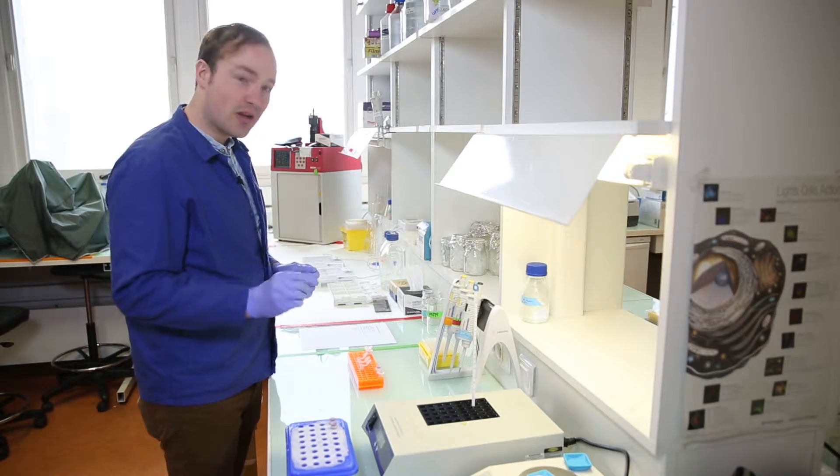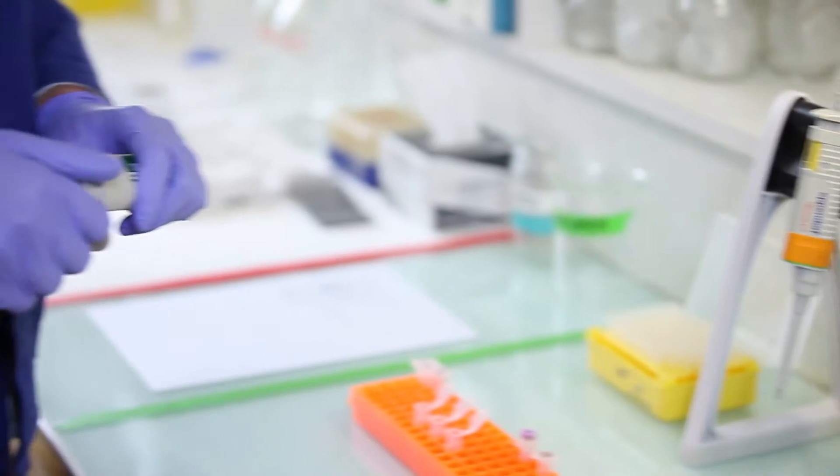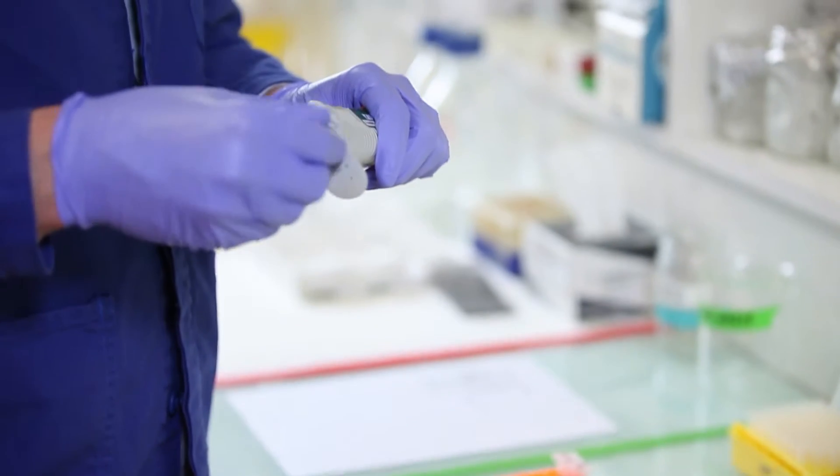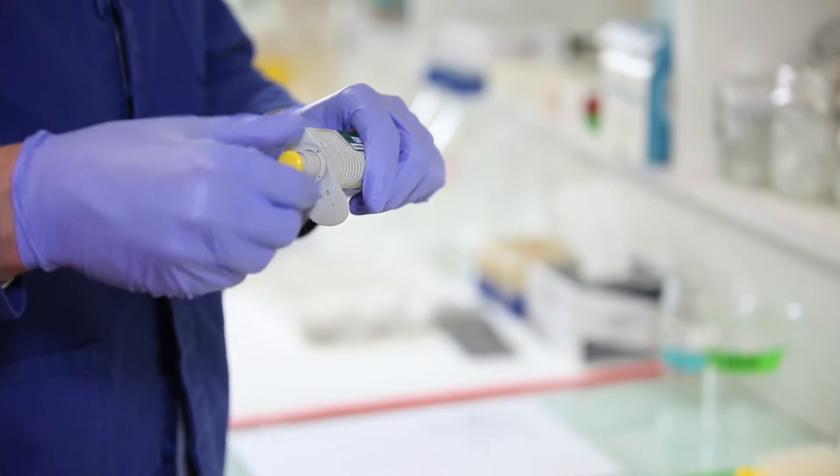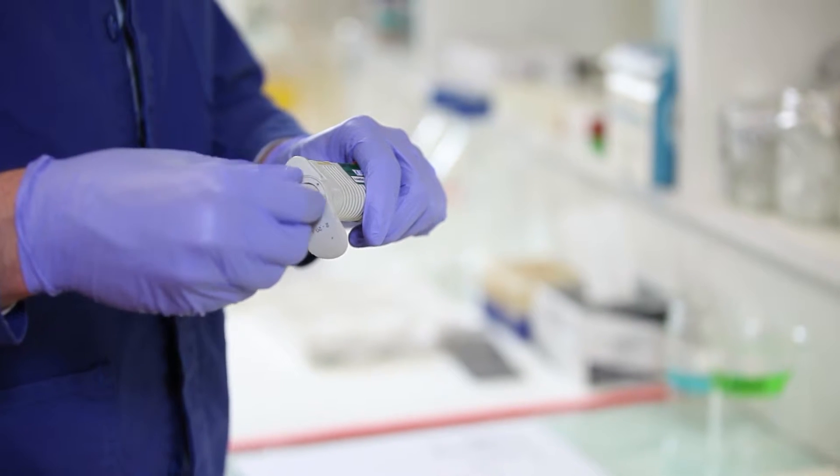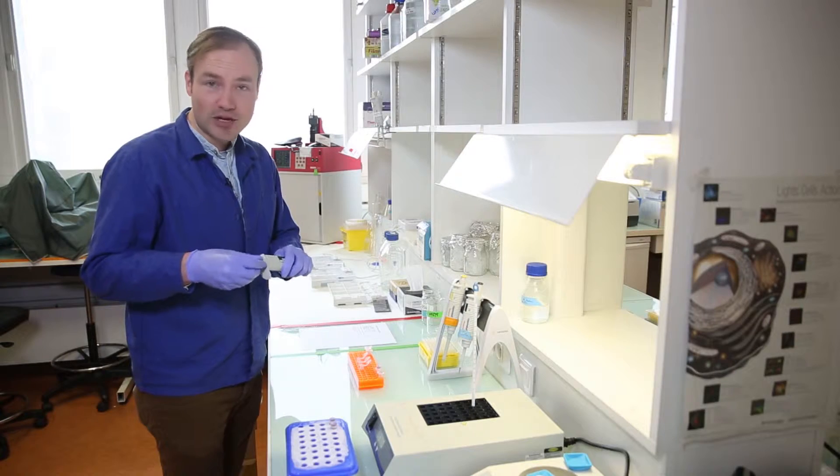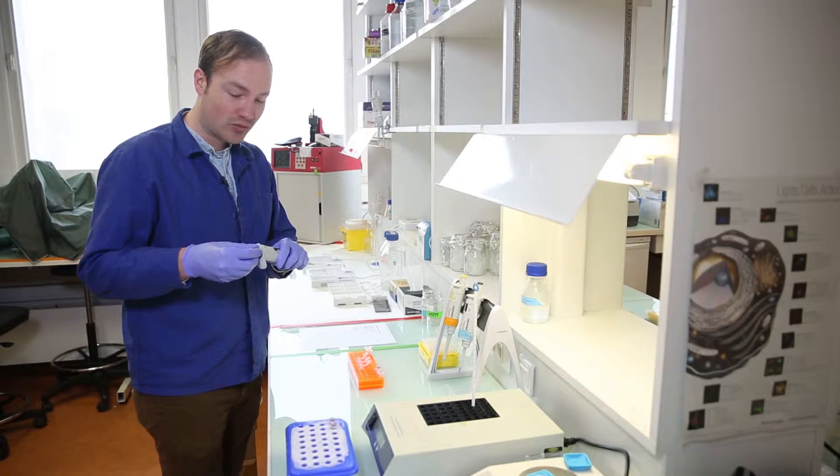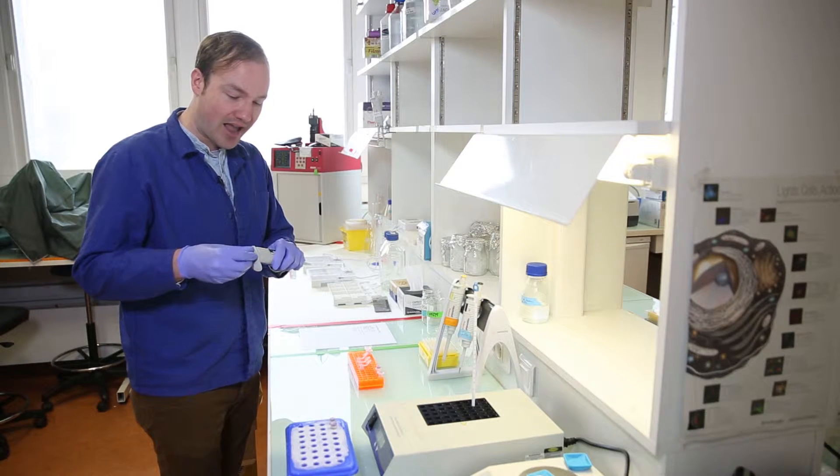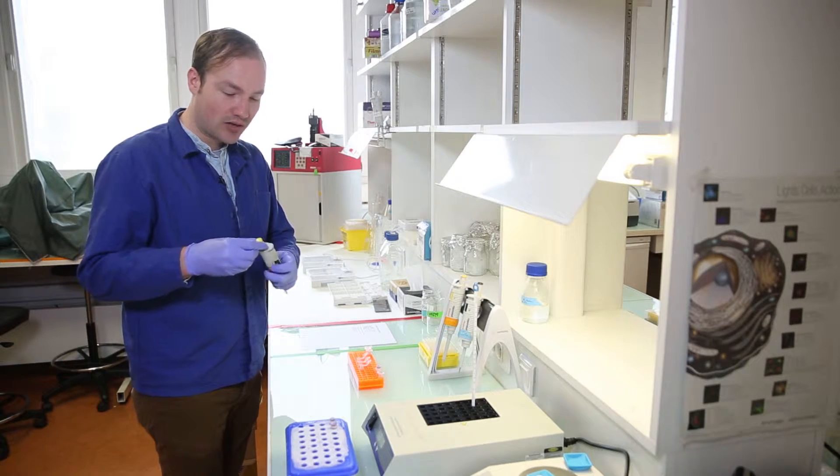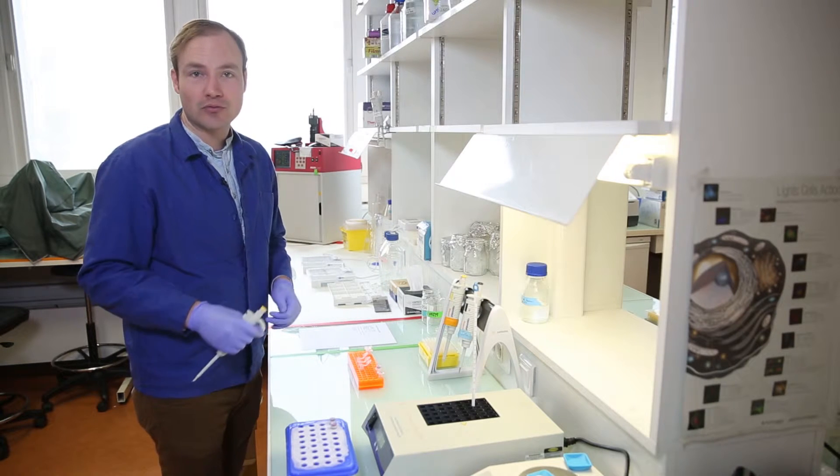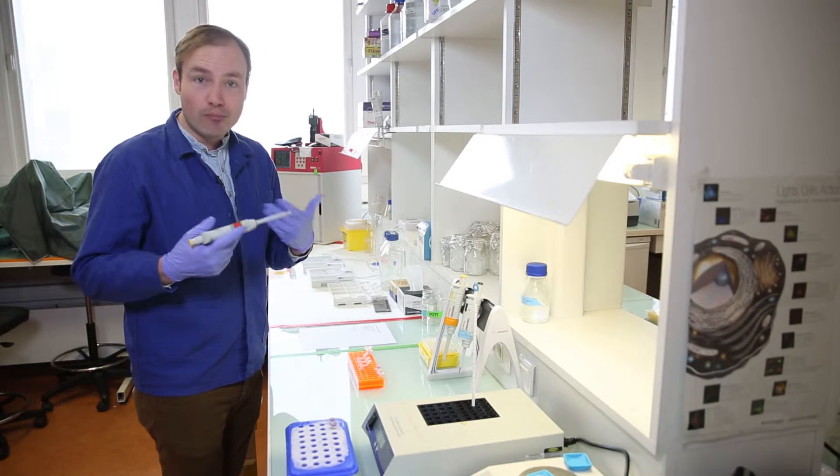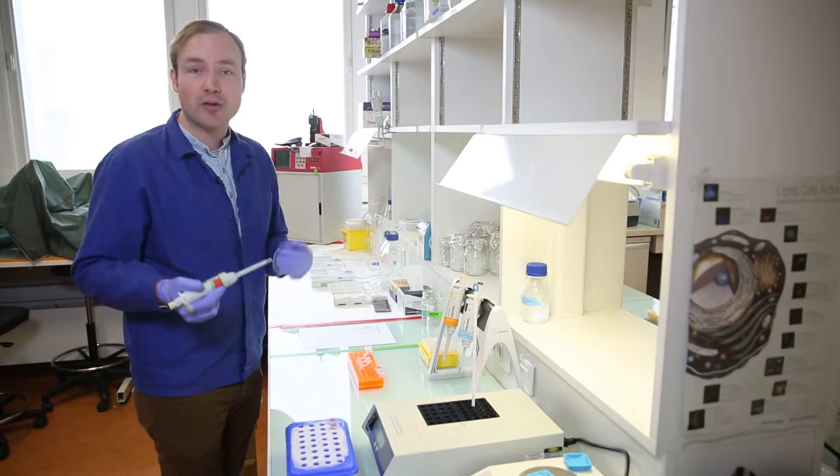Next, 10 microliters of buffer. So this is a buffer specific to the restriction enzymes that we'll be using in this digest. Restriction enzyme buffers provide two things: a pH buffer, because most restriction enzymes work best around neutral pH, and they're a source of magnesium ions. So restriction enzymes and most enzymes in biology work much better if they have magnesium ions.